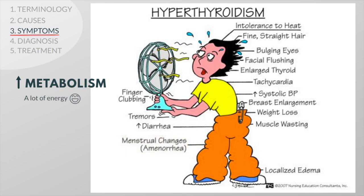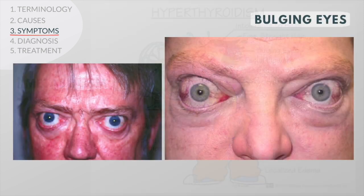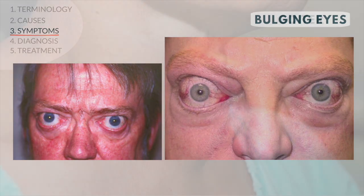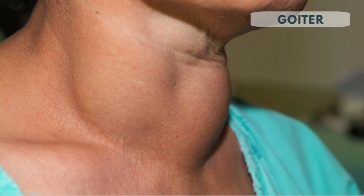Since hyperthyroidism increases your metabolism, many individuals initially have a lot of energy. However, as the hyperthyroidism continues, the body tends to break down, so being tired is very common. In Graves' disease, the eyes may look enlarged because the upper eyelids are elevated. Sometimes one or both eyes may bulge. Some patients have swelling of the front of the neck from an enlarged thyroid gland, also called a goiter.